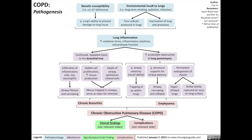Overall, this combination of environmental and genetic factors causes lung inflammation, resulting in oxidative stress, inflammatory cytokines, and increased protease function. This chronic inflammation is systemic, but in terms of its effect on the lungs, it affects both the bronchial tree — which are the airways — and the lung parenchyma, which is the bulk of the lung tissue.